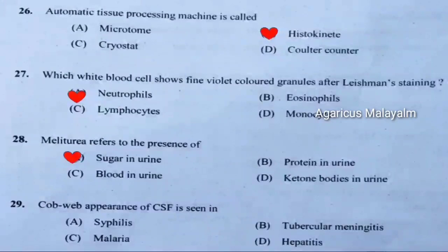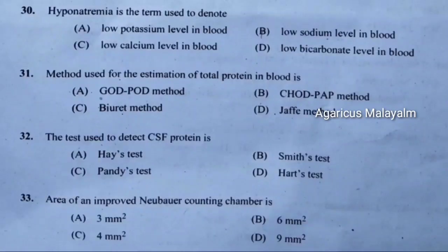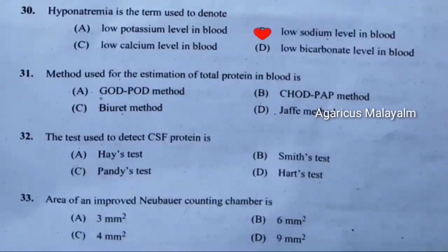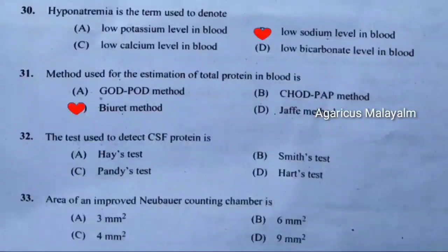Twenty-ninth question: Cobweb appearance of CSF is seen in. Correct answer is option B — tubercular meningitis. Thirtieth question: Hyponatremia is the term used to denote. Correct answer is option B — low sodium level in blood. Thirty-first question: Method used for the estimation of total protein in blood is. Correct answer is option C — biuret method.